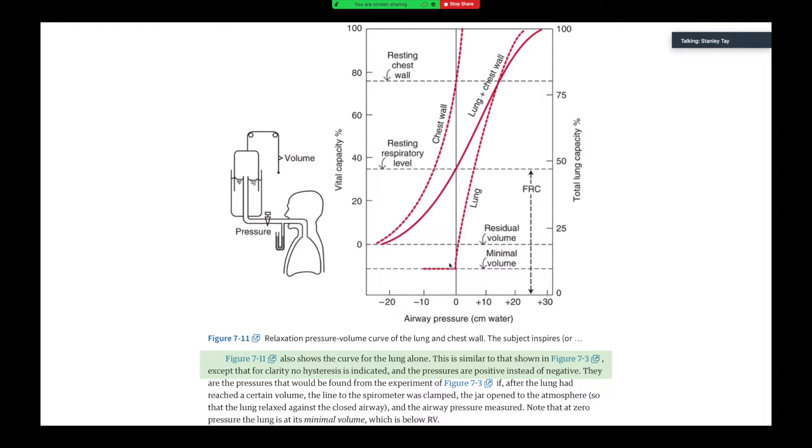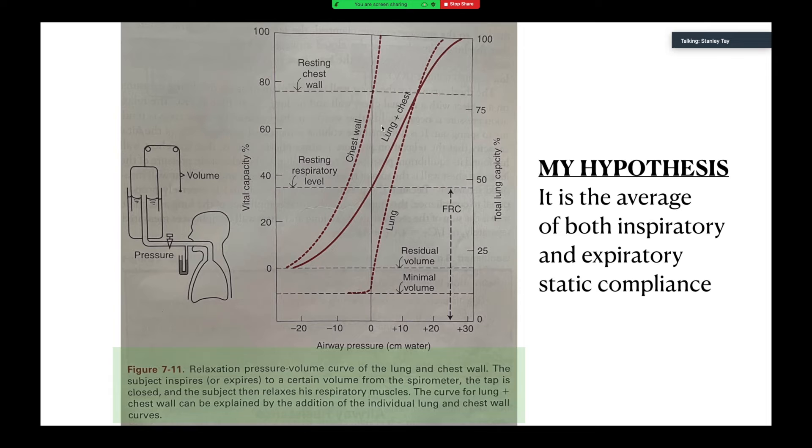And so the next question I have is, if you've excluded the hysteresis, and we know that with a hysteresis graph, there is both an inspiratory and expiratory component, is the curve that you have drawn here, is that inspiration or is that expiration? I've got the answer in the description here. So the relaxation pressure volume curve of the lung and chest wall, the subject inspires or expires to a certain volume from the spirometer. And so my hypothesis is that these static compliance curves, which don't show hysteresis, it is the average of both the inspiratory and expiratory static compliance.